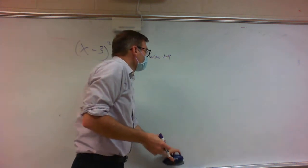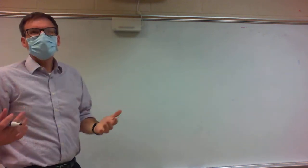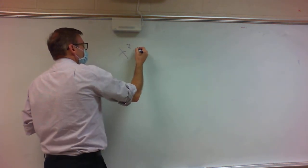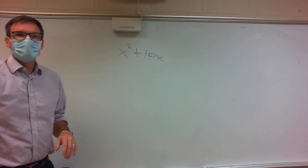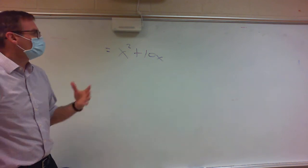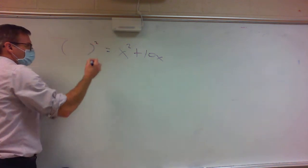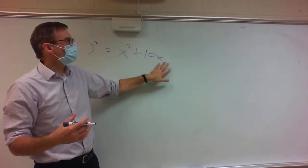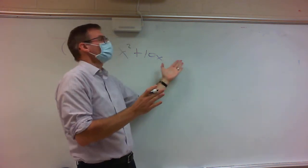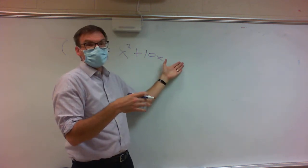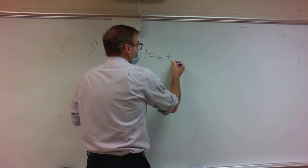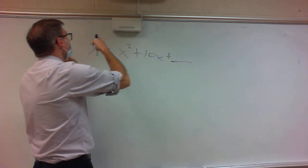The idea of completing the square: if I give you x squared plus 10x, this is not a perfect square because it can't be written as one — it's missing something. If I have an x squared, an x term, and a number, and that number is what it needs to be, then I can write it as a perfect square. Our job is to figure out what goes there so this can be written as a perfect square.